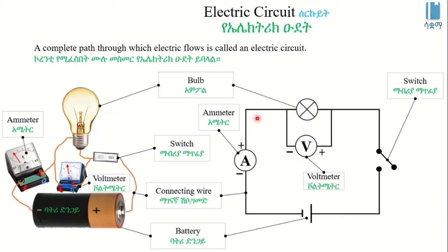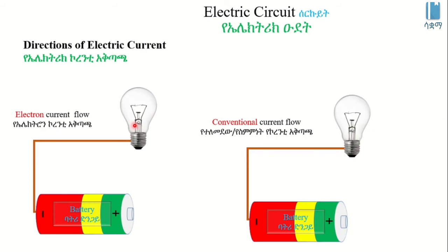Electric current: the electrons are negative. The electrons flow from negative to positive terminal. This is electron current flow. It will be positive to negative. Because this electron current flow is negative to positive.